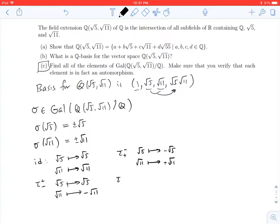And then finally, we have a tau minus minus, that will send root 5 to negative root 5, and root 11 to negative root 11.